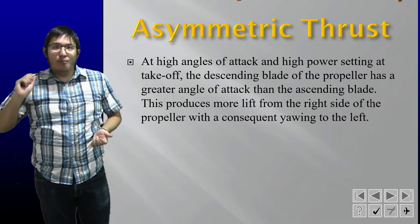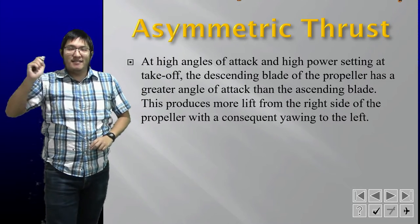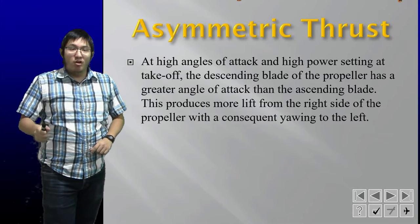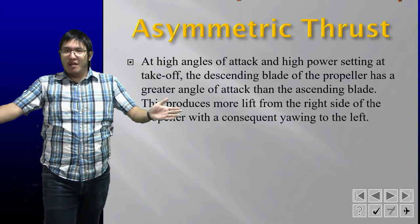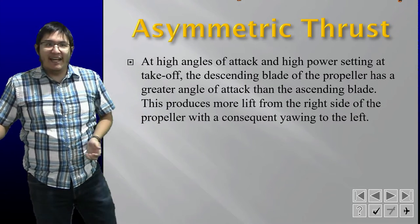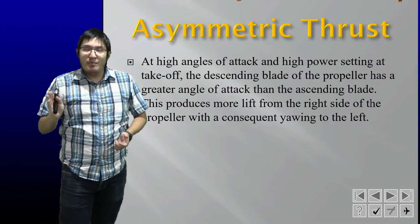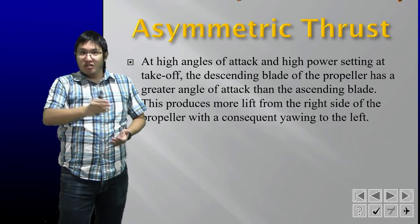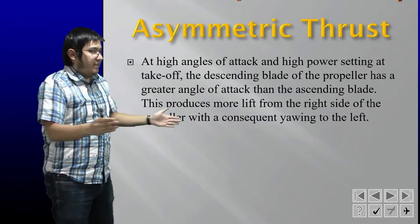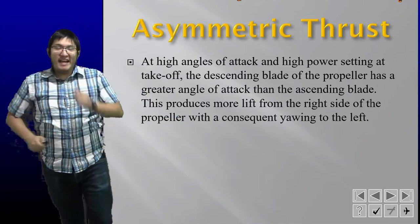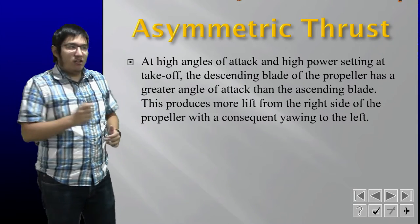The descending blade will have a much greater angle of attack than the ascending one, meaning it will produce more lift, which results in more thrust on the right side of the propeller than the left. The result will be a yawing to the left. Single-engine aircraft will have a lot of tendency to yaw to the left.